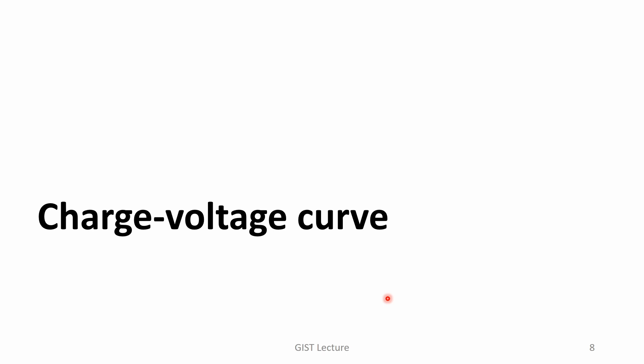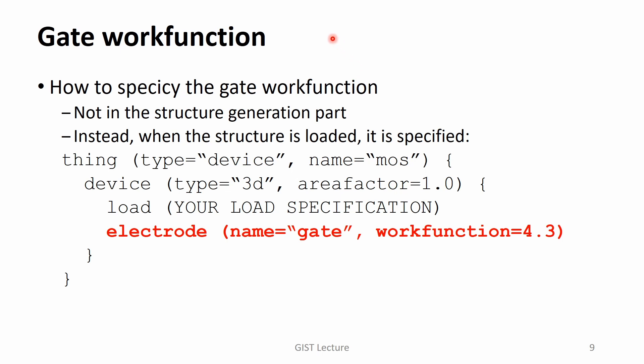Now, we have a structure to be simulated. The gate contact has a property to be specified before performing the simulation. It is work function. The work function is an energy difference between the vacuum level and the Fermi level. Since the work function is directly related to the threshold voltage, it is very important. The work function is not specified in the structure generation part by the mapmaker statement. Instead, when the structure is loaded, it is specified. In this example, the gate work function is 4.3 electron volt.